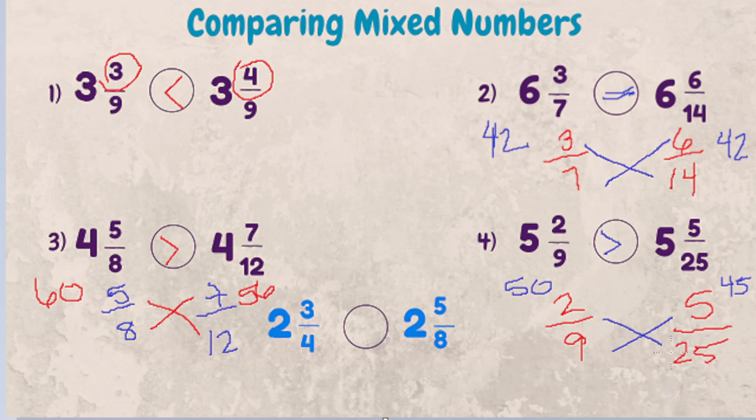Now that you've been through four examples, try one on your own. See if you can tell me which one is greater, two and three-fourths or two and five-eighths. Leave your answer in the comments. Good luck!